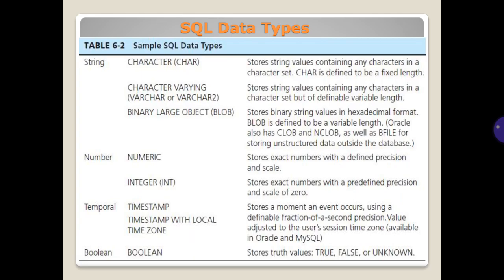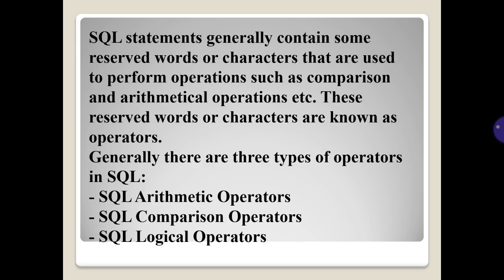SQL data types: string, number, temporal, and boolean. SQL statements generally contain reserved words or characters used to perform comparison and arithmetic operations. These reserved words or characters are known as operators. Generally there are three types of operators in SQL: SQL arithmetic operators, SQL comparison operators, and SQL logical operators.